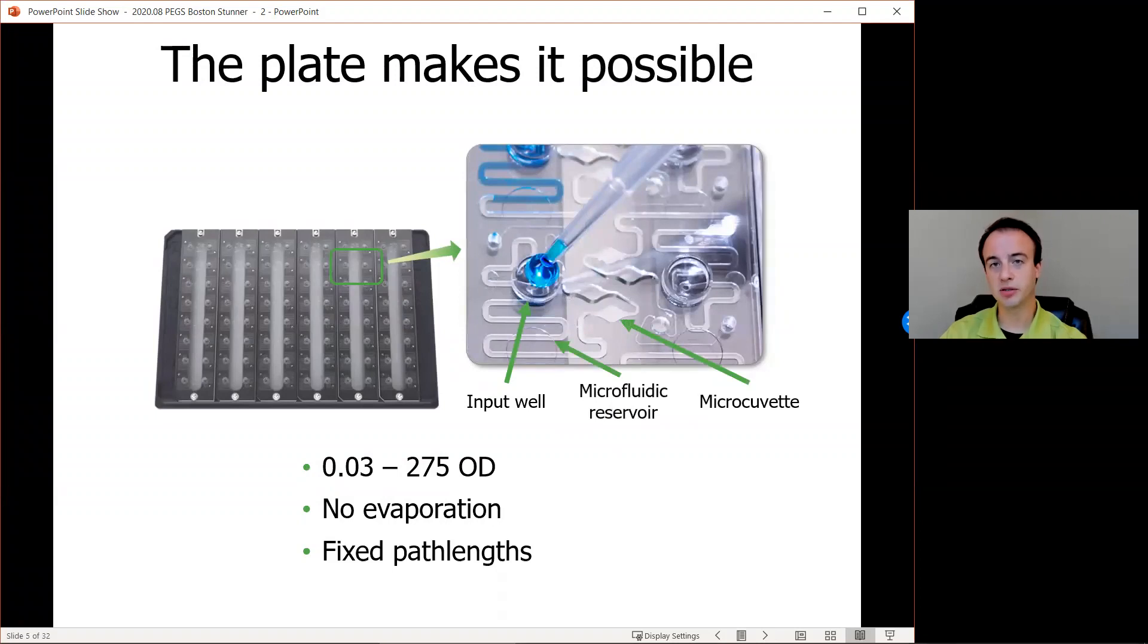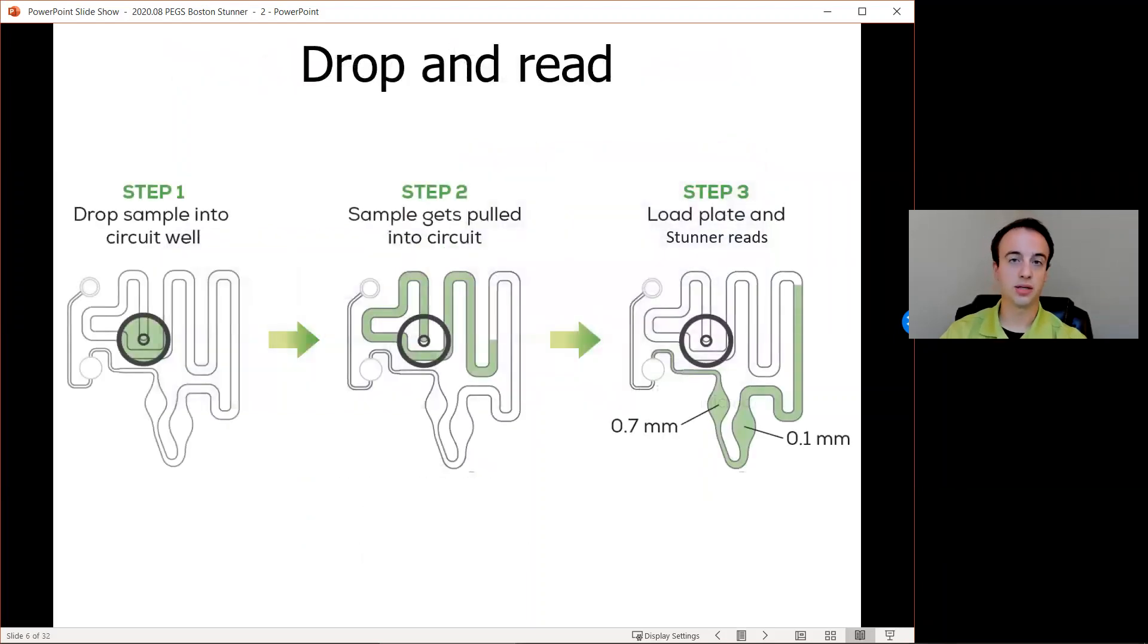Two microcuvettes in the microfluidic circuit cover a wide dynamic range of 0.03 to 275 OD. Samples, once deposited into that input well, are then drawn into the storage channel. A sample can be left behind in the storage channel for up to two hours without detectable evaporation. During a read, Stunner pumps the sample from the storage channel into the microcuvettes where the samples are read. Two different path lengths give us the wide dynamic range.